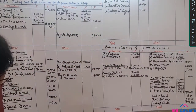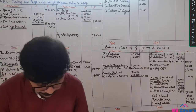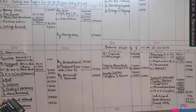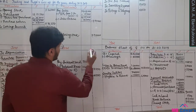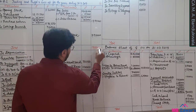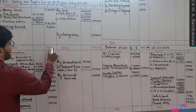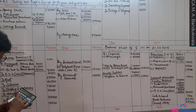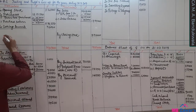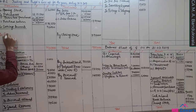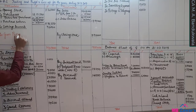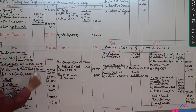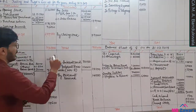Now calculate gross profit. Credit side of trading account: sales 13,90,000 plus closing stock 3,93,000 = 17,83,000. Debit side: opening stock 2,34,000 plus corrected purchases 11,76,500 plus carriage inward = total. Gross profit carried down = 2,79,500.